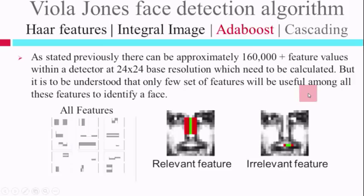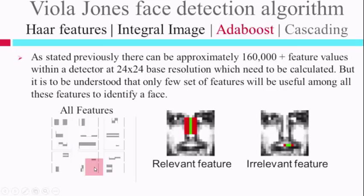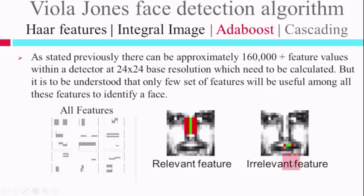Moving further: AdaBoost is used to eliminate redundant features. We have all combinations of positions and sizes — that is, all 160,000 features. But are all of them relevant? Definitely not. For example, the bridge-of-nose feature will yield the highest values when applied at the correct position on the face image, making it a very relevant feature. Whereas another feature applied at the upper lip region gives no relevant information because that region is relatively constant — so it is an irrelevant feature that can be eliminated.